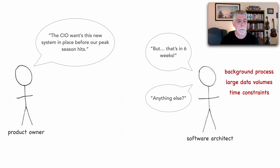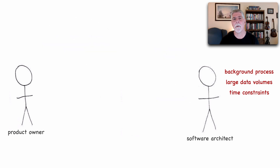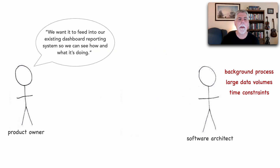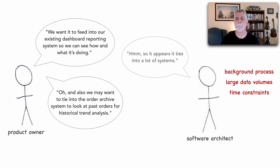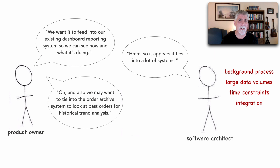The architect asks if there's anything else, and the product owner adds: yeah, we want it to feed into our existing dashboard reporting system so we can see how and what it's doing. And also we may want to tie into the order archive system to look at past orders for historical trend analysis. The architect notes: so it appears it ties into a lot of systems — and that's all about integration.